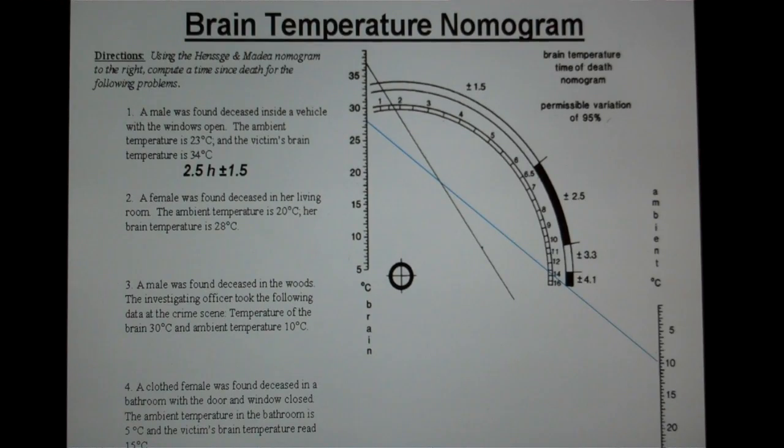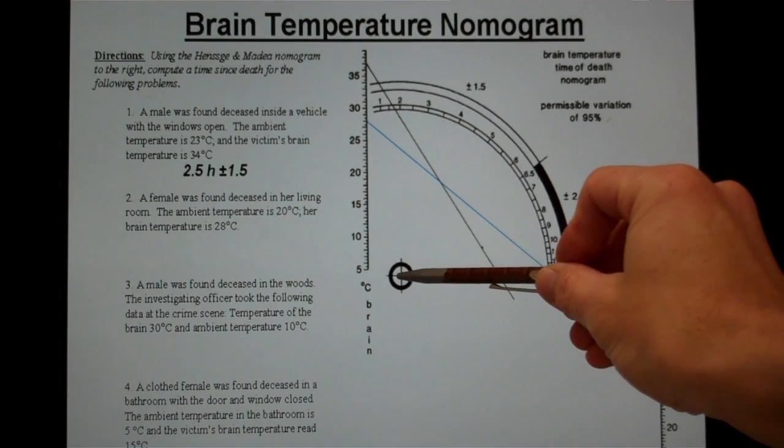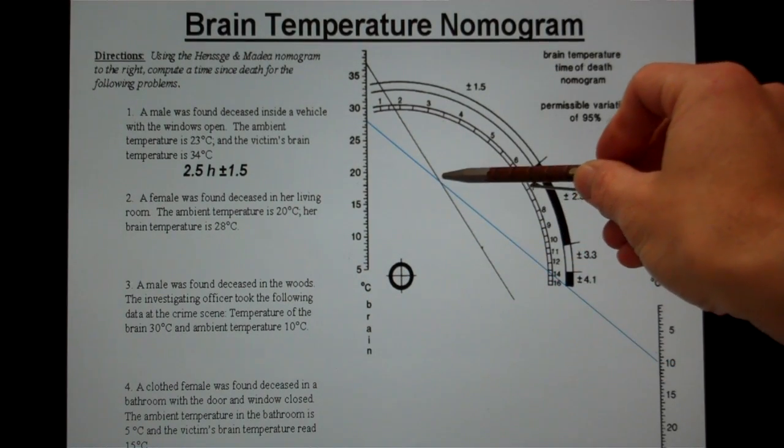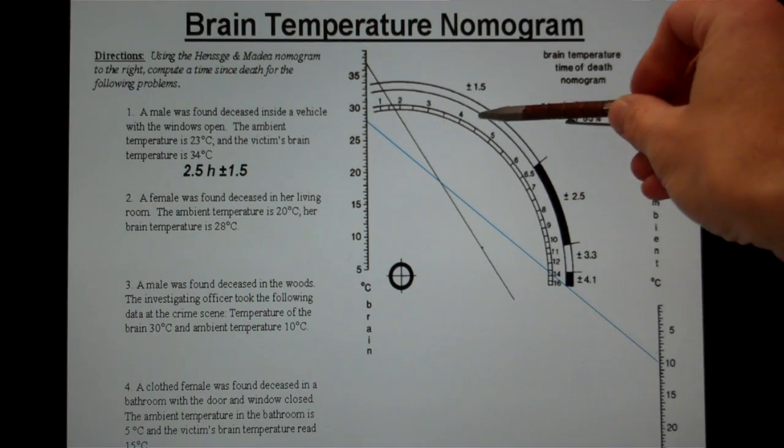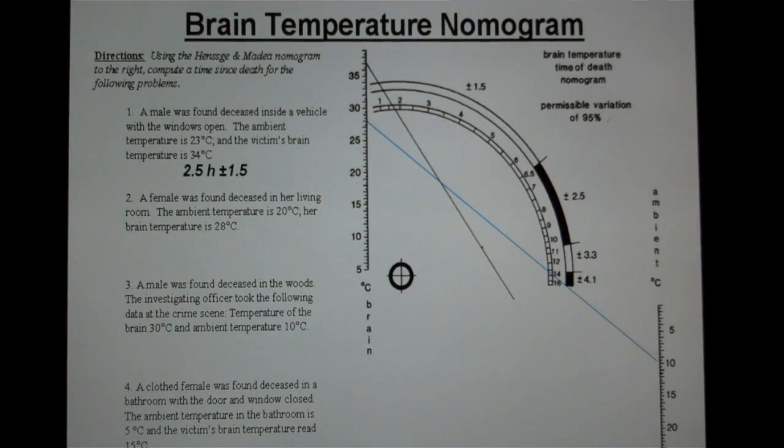I will connect those two points with a straight line. And again, I'm using blue in this example. Then I'm going to go from the target here out through that point at which my blue line intersects the black line, which is part of the nomogram, and continue to extend that out so I can get an approximation of time of death.